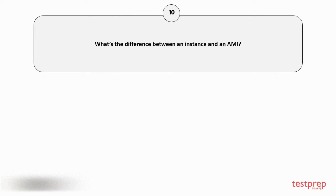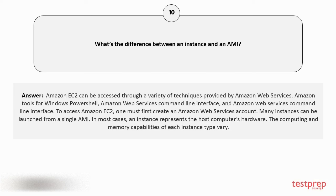Question number 10: What's the difference between an instance and an AMI? Amazon EC2 can be accessed through a variety of techniques provided by Amazon Web Services, including Amazon Tools for Windows PowerShell, AWS Command Line Interface. To access Amazon EC2, one must first create an Amazon Web Services account. Many instances can be launched from a single AMI. In most cases, an instance represents the host computer's hardware, and the computing and memory capabilities of each instance type vary.